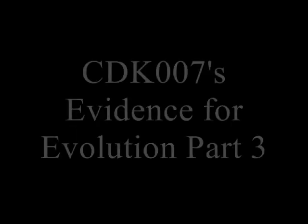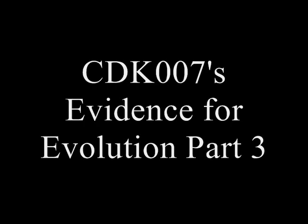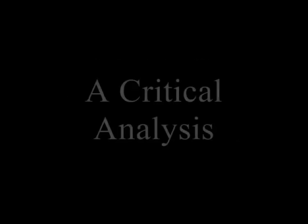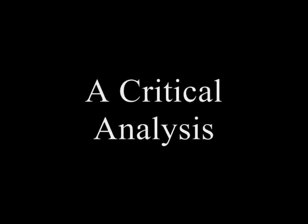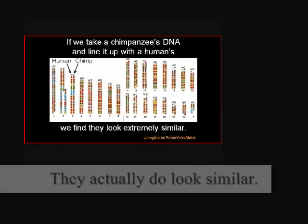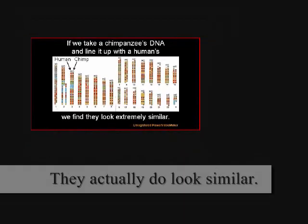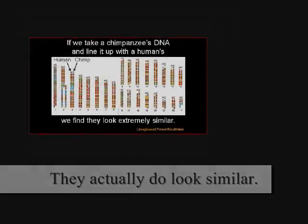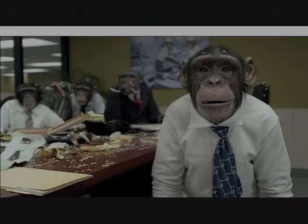This is a response to CDK7's Evidence for Evolution, Part 3 — a critical analysis. According to CDK7, if we take a chimpanzee's DNA and line it up with humans', we find they look very similar. And in fact, they do.